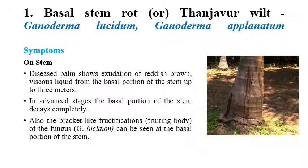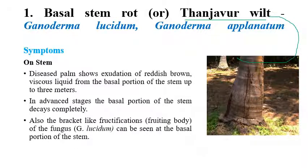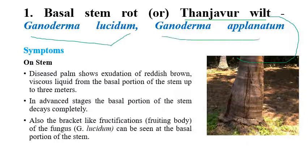The first disease is Basal Stem Rot or Tanjavur Wilt. It is called Tanjavur Wilt because the disease was first identified in the Tanjavur district of Tamil Nadu. It is caused by Ganoderma lucidum or Ganoderma applanatum. Symptoms can be seen on various parts including stems, inflorescence, pods, and nuts.